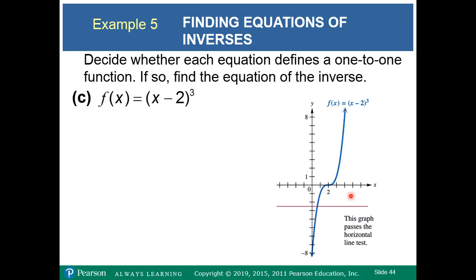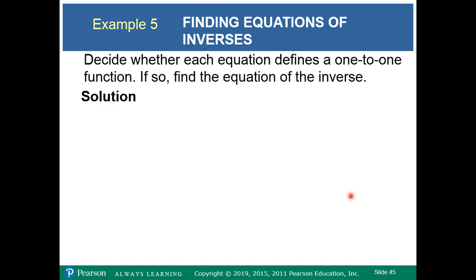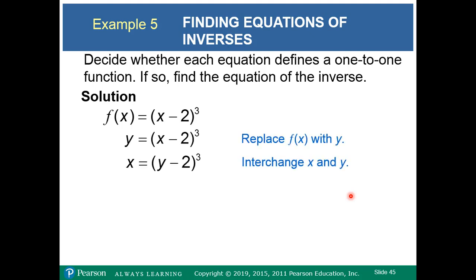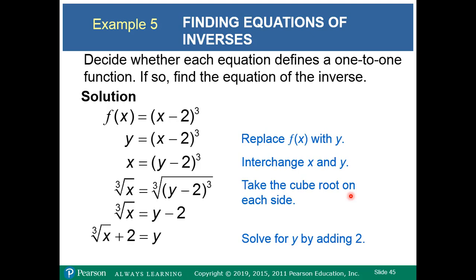For this next function, the horizontal line test confirms it is one-to-one. Starting with the function, we switch x and y, then take the cube root of both sides to solve for y. So f⁻¹(x) equals the cube root of x plus 2, which undoes f(x) equals (x minus 2) cubed.